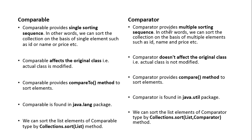Comparable has a compareTo method to sort elements. In the case of Comparator, it has two methods: the compare method as well as the equals method. Comparable is found in the java.lang package and Comparator is found in the java.util package. In the Collections class we have a sort method — when using only Comparable, we pass just the list; when using Comparator, we also pass the Comparator object within the Collections.sort method.